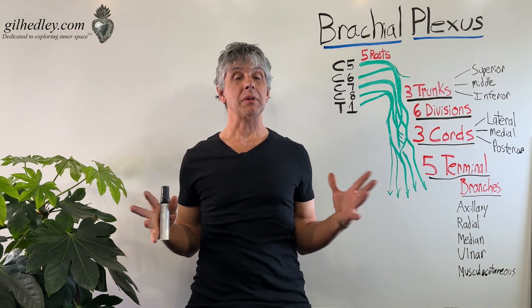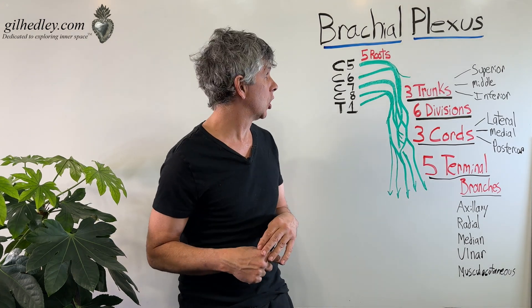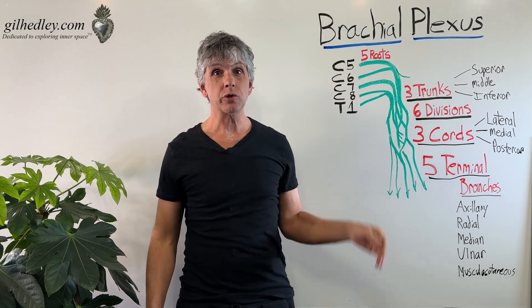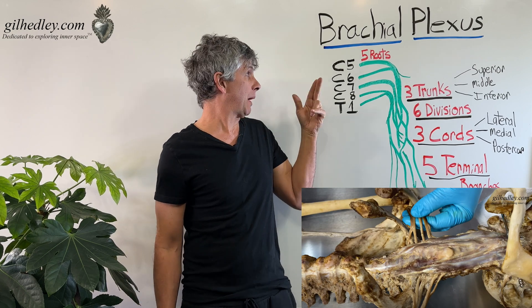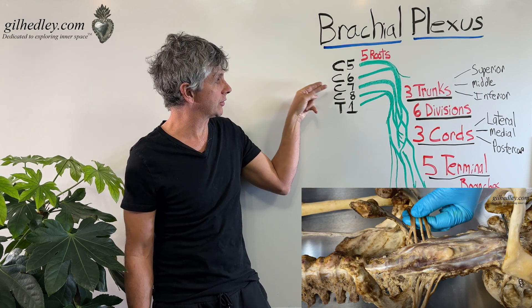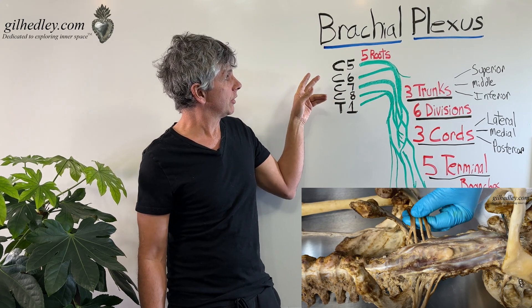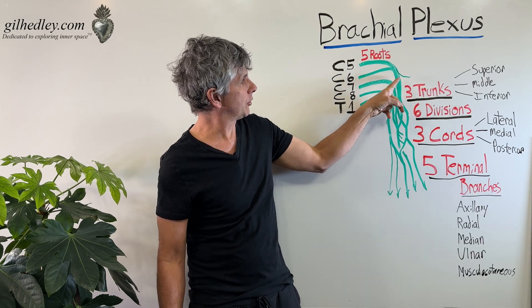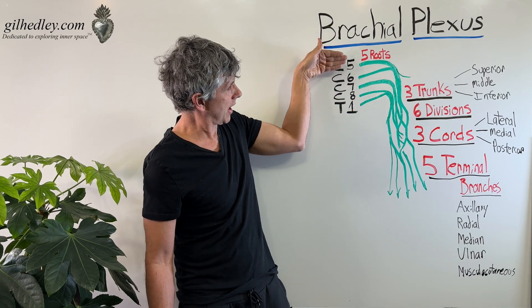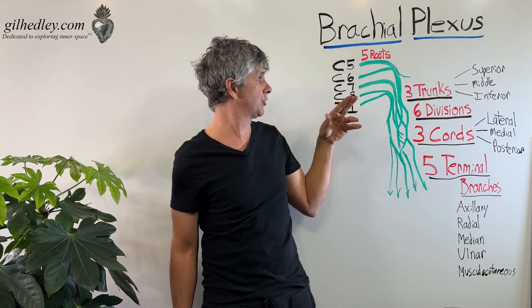I hope you enjoyed our playful brachial plexus dance. Here's a schematic of the brachial plexus to take you a little further along. Those five roots which we played out with our feet are from spinal nerves C5, C6, C7, C8, and T1. The roots combine C5 and C6 to form the superior trunk, because they're higher up on your vertebral column. C7 forms the middle trunk.